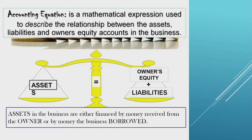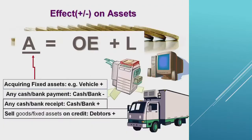The accounting equation is a mathematical expression used to describe the relationship between assets, liabilities, and owner's equity in the business. Assets are on the debit side, while owner's equity and liabilities are on the credit side. The accounting equation states that assets equal owner's equity plus liabilities.